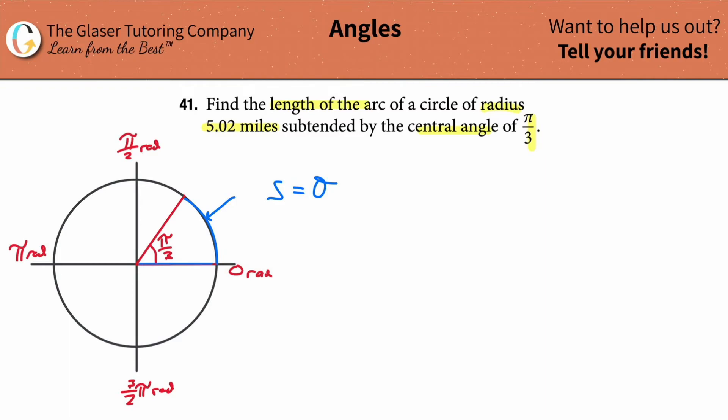So what's the radius? Well, it told us that it's 5.02 miles. So the arc length is equal to the angular measurement multiplied by the radius.